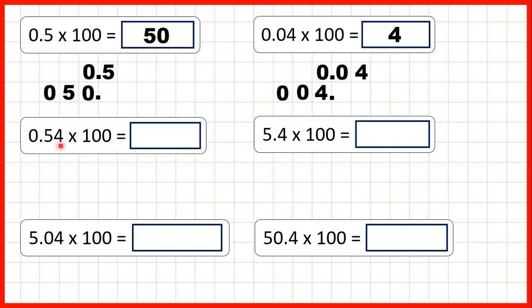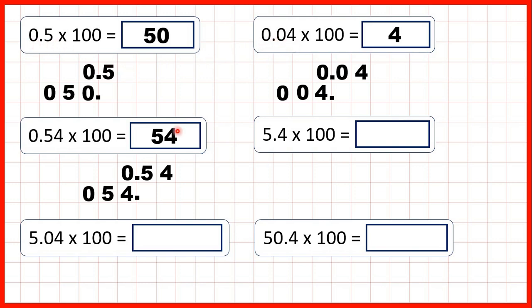Next we have 0.54 times 100. So we write the number out, copy down the decimal point and move the digits two squares to the left. That gives us the decimal point on the end, so we have a whole number — that's 54, because we can ignore zeros at the start of a whole number. Notice 0.54 is the same as 0.5 plus 0.04, and that's why our answer 54 is the same as 50 plus 4. What we've done here is the same as the previous questions, but instead of doing it one digit at a time, we've moved the five tenths and the four hundredths in the same question.